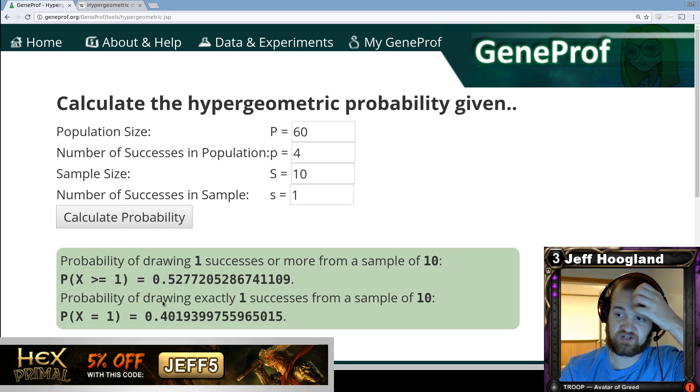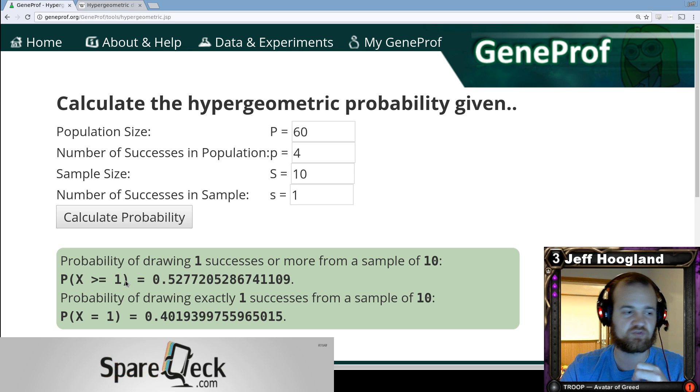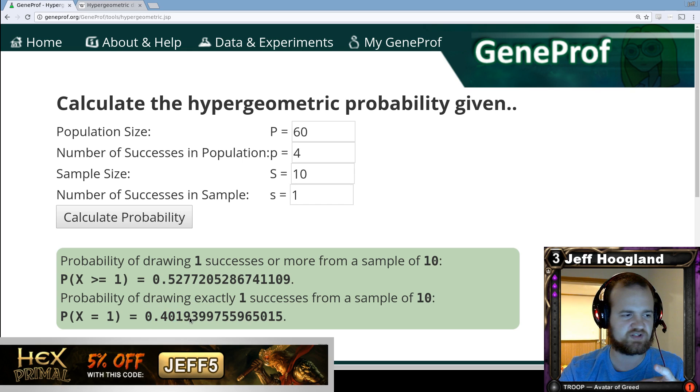And there's two different probabilities here. The first one says for X greater than or equal to one. And what this means is that the probability of drawing one or more copies of our four-of in the first ten cards of our deck is 0.52 or about 52%.